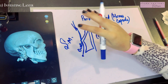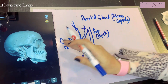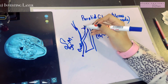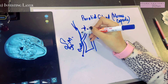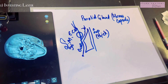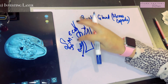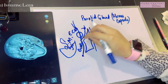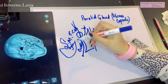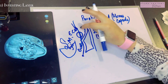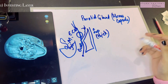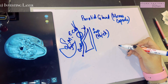The part between the styloid process and the mandible is known as the stylomandibular ligament — a very important ligament. Although it is thin in most of its part, at the stylomandibular ligament it is thick. The stylomandibular ligament separates the parotid gland from the submandibular gland. An important significance is that it is pierced by the external carotid artery. When surgeons are trying to excise the submandibular gland, they must be careful because the external carotid artery lies very close.